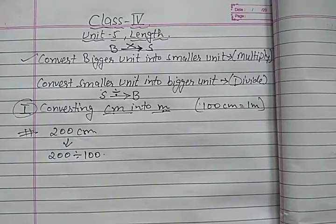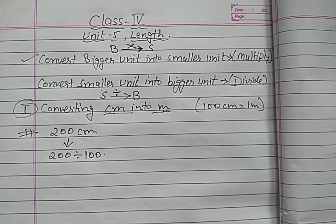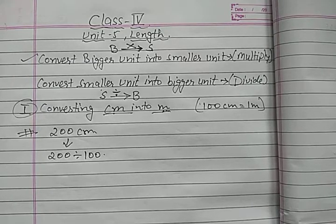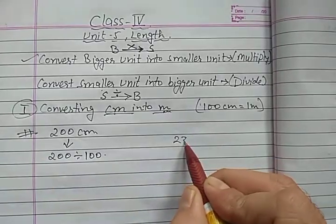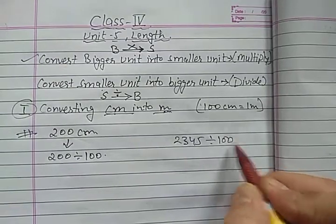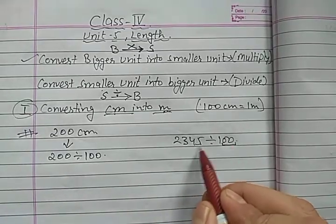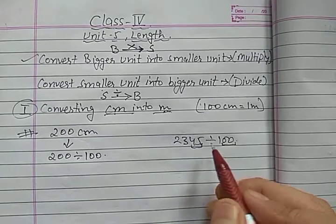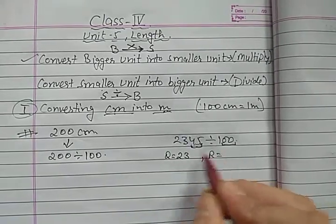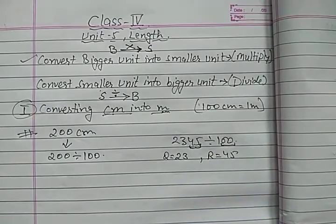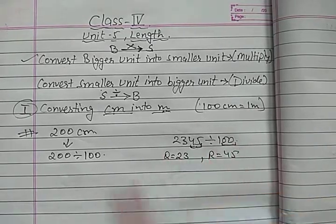Now, you know in the previous chapter — unit 4, the division chapter — you learned how to divide a number by 10, 100, or 1000. अगर हमें किसी भी number को 10, 100, या 1000 से divide करना होता था, तो हम zeros count करते थे, और जितनी zeros हैं उतने ही places right side से अलग कर देते हैं. For example, 27345 divided by 100: 23 is our quotient and the remainder is the last two digits, that is 45. This is oral division from unit 4.